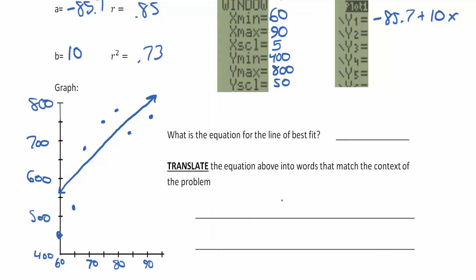It says what is the equation for the line of best fit? Well, I just ripped it off of here. So this is going to be y hat equals negative 85.7 plus 10x.